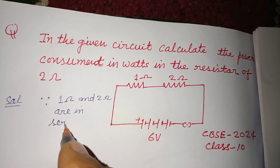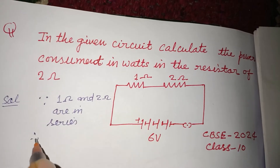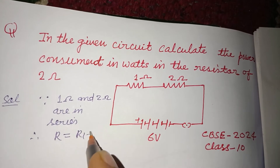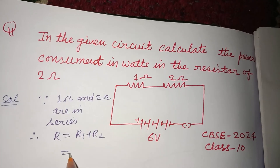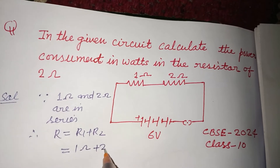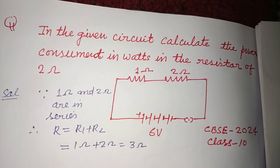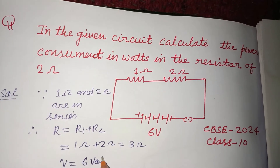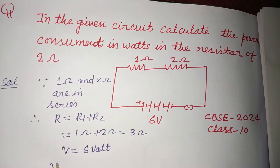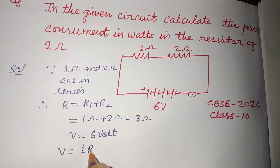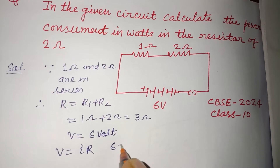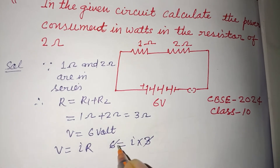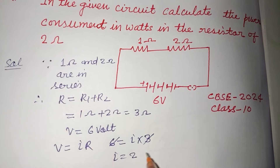Since 1 ohm and 2 ohm are in series, the equivalent resistance R_eq equals R1 plus R2, that is 1 ohm plus 2 ohm, equal to 3 ohms. The voltage given is 6 volts. Using Ohm's law, V = IR, where V is 6, R is 3, therefore I equals 2 ampere.